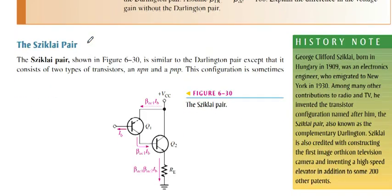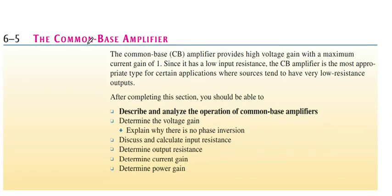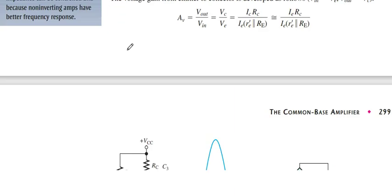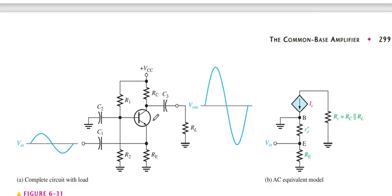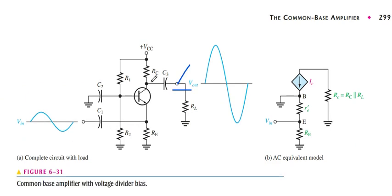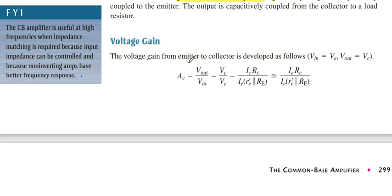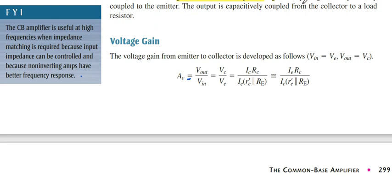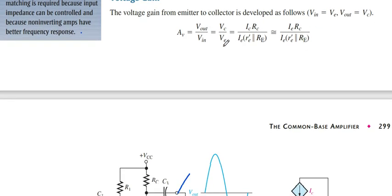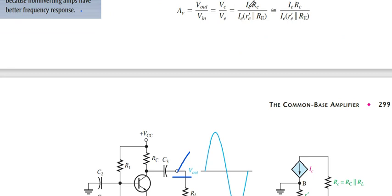Now we get the common base amplifier. In common base amplifier, we get the output across collector at this point, while we give the input at emitter. The voltage gain is Vout divided by Vin. Vout is VC and Vin is VE. VC equals IC times RC, and VE equals IE times r'e parallel to RE.